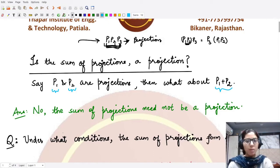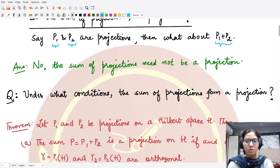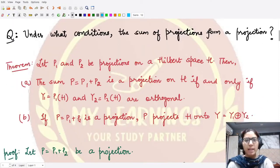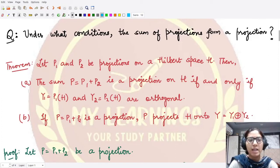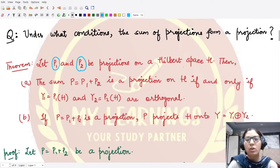So what are the conditions under which this sum of projections forms a projection? We have a result regarding this thing. The theorem here states that whenever we have P1 as a projection, P2 as a projection defined on the given Hilbert space H, then the sum P1 plus P2 is a projection on H if and only if...